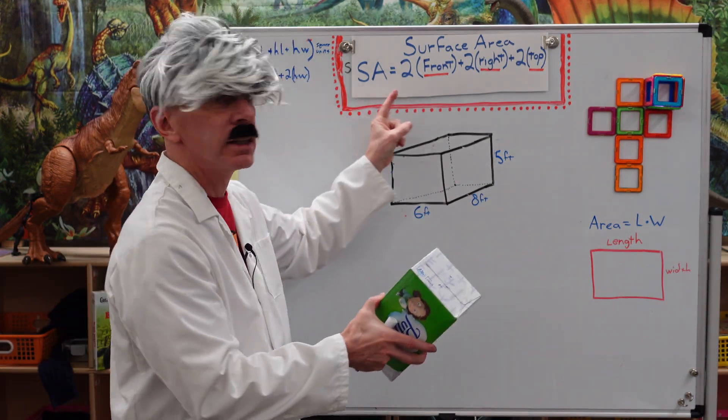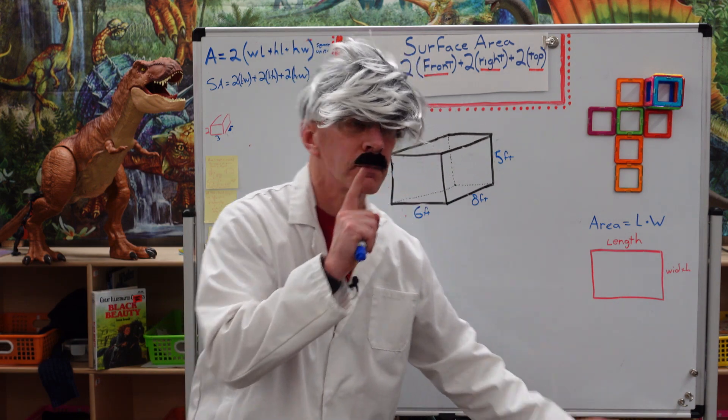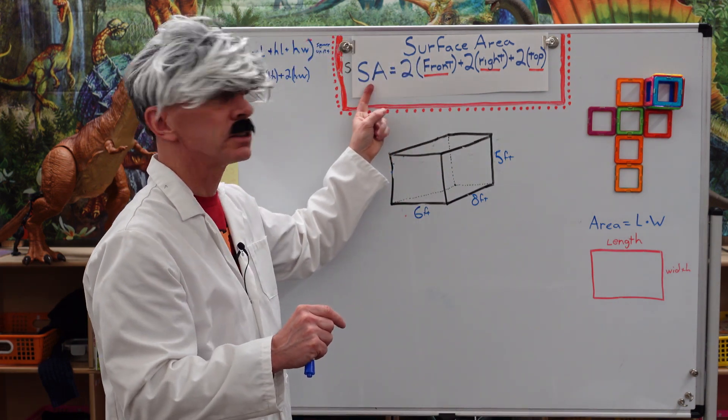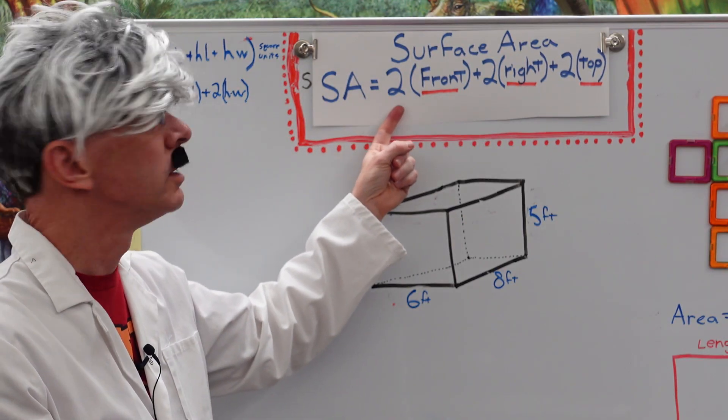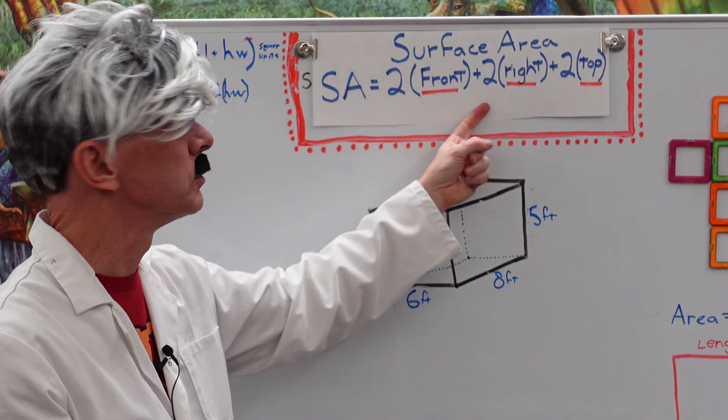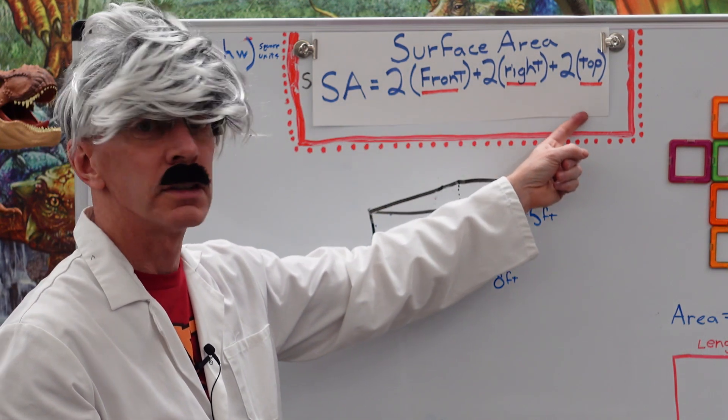So, we look at this secret formula. Do not tell anyone. Shh! This stands for surface area. Surface area equals 2 times front times 2 times right times 2 times top.